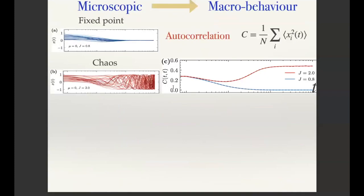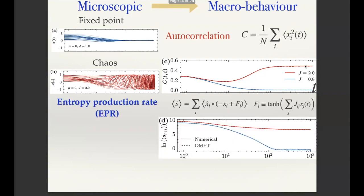Before going to entropy production, if you look at the macroscopic behavior through the autocorrelation function, you clearly see that in the fixed-point case it decays to zero, while in the chaos phase it converges to some non-zero value. So the autocorrelation function is a good order parameter for this dynamical system.